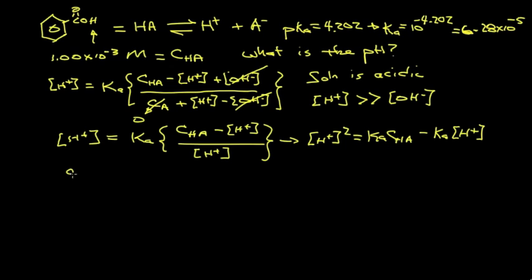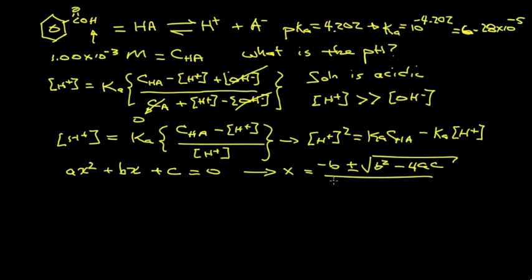We can use the quadratic equation roots. We recall that in general, AX squared plus BX plus C equals 0. Then the solutions are X equals minus B plus or minus the square root of B squared minus 4AC, all over 2A.